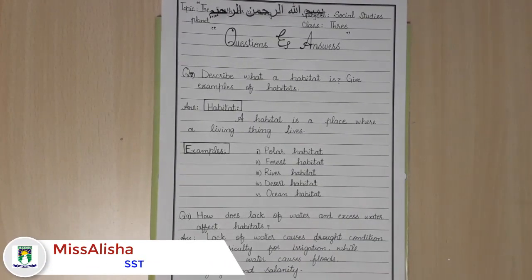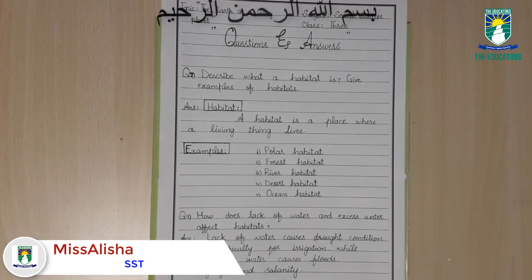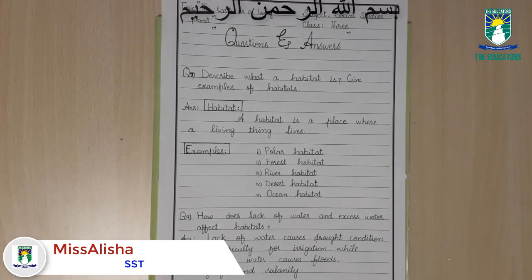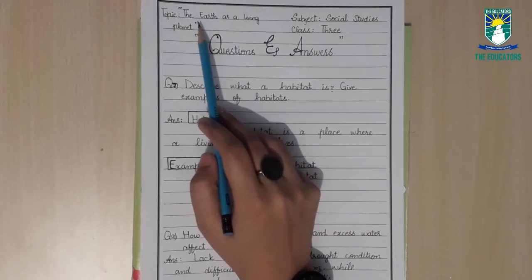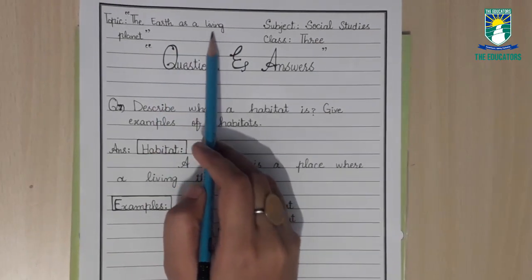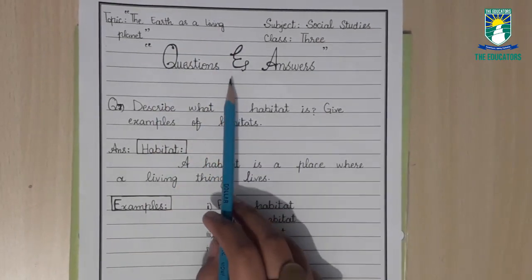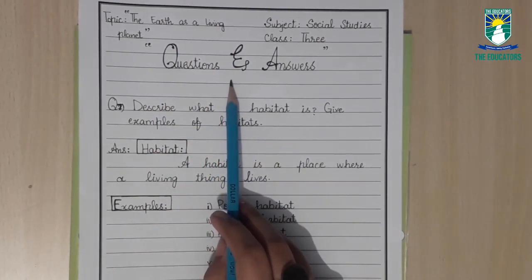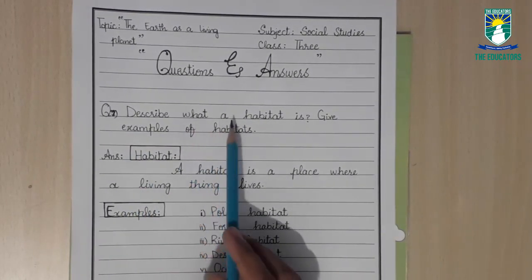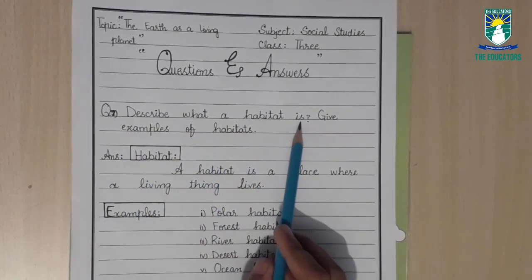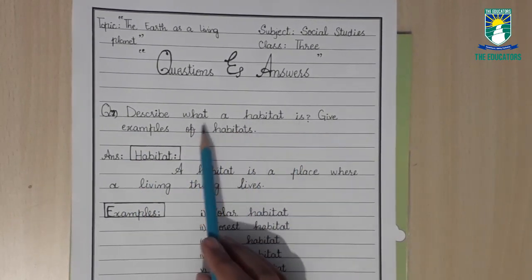Assalamualaikum students, how are you all? I hope you all are fine and safe. So class 3, we are going to do our question and answers. The topic is 'The Earth is a Living Planet' and we are going to do question and answers. Let's read it. Question number 7: describe what a habitat is.